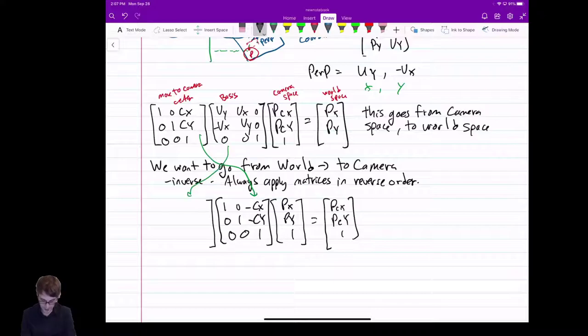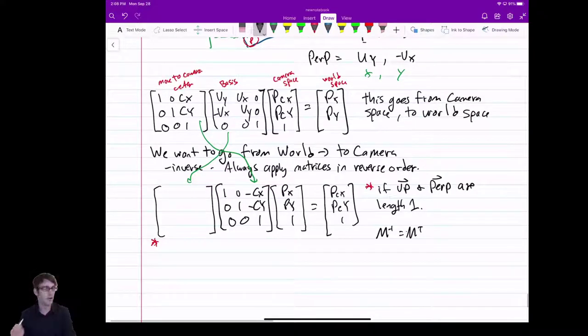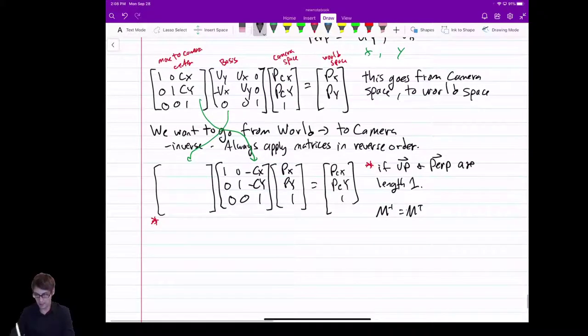So this one's a little more tricky. How on earth do we invert this basis function? Well, you could just use the invert command, but there's a nice trick here. If the up vector and the perpendicular vector are length 1, then we have an orthonormal basis. We have two orthogonal vectors of length 1. This is a special case. The inverse of that matrix is just the transpose. But only in those conditions. Only if they're length 1. If they're not length 1, when you go in one direction, it'll add a scale. When you go in the other direction, it won't undo the scale, so it won't work anymore.